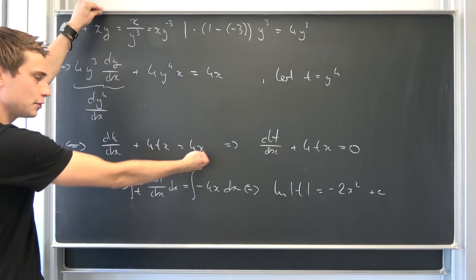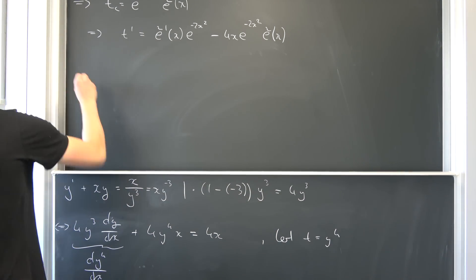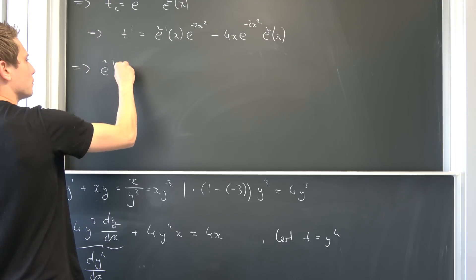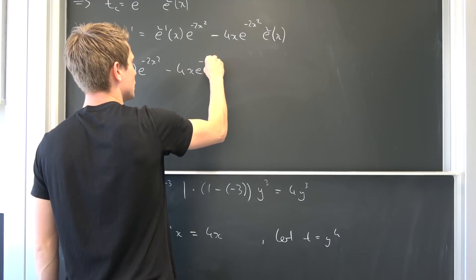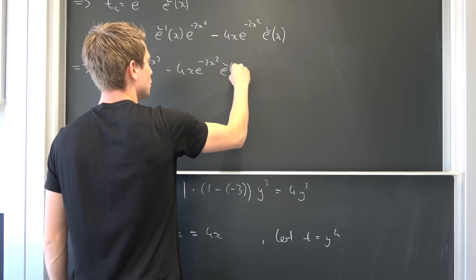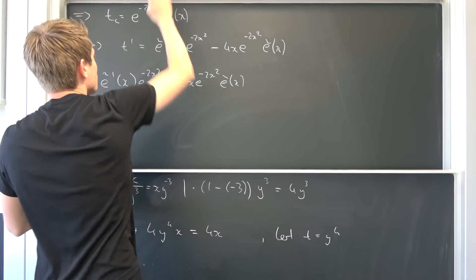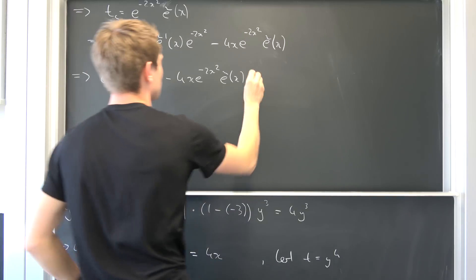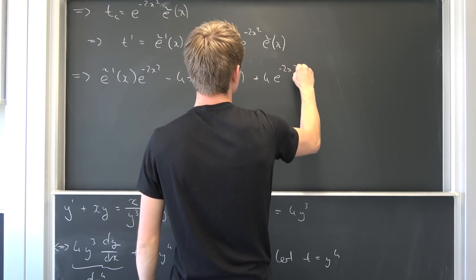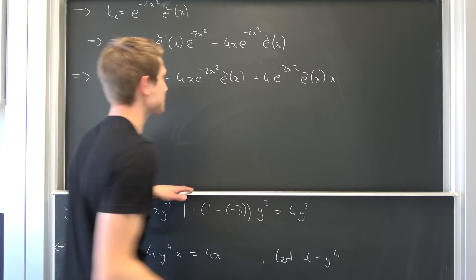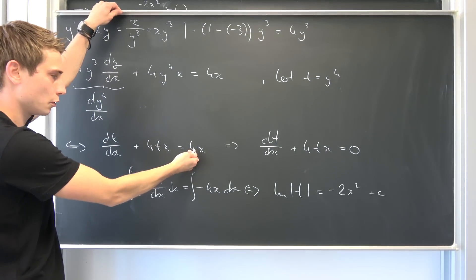Now we plug t and t prime into our differential equation. We have e-schlange prime times e to the negative 2x squared, minus 4x times e to the negative 2x squared times e-schlange of x, plus 4 times t times x — which gives us positive 4 times e to the negative 2x squared times e-schlange of x times x. You'll notice these two terms cancel out, leaving us with the equation equal to 4 times x.